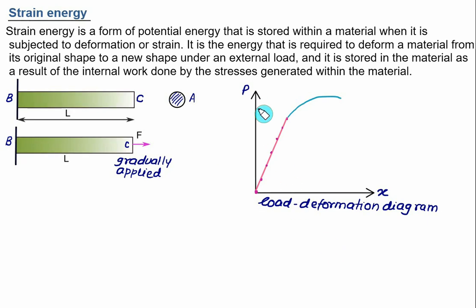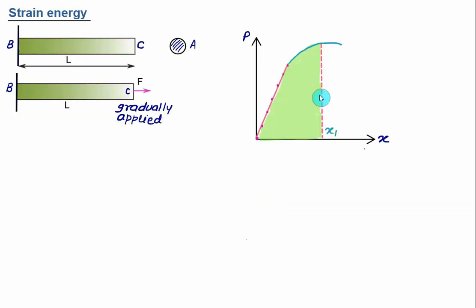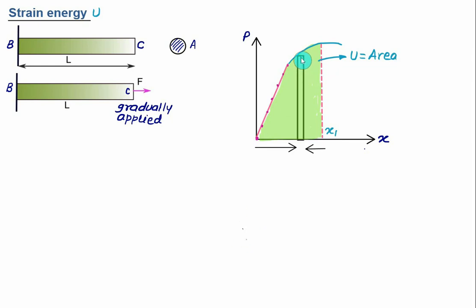The area under the P versus x diagram represents the work done. So if we have a deformation up to x₁, this area represents the work done due to load P, and this area is called the strain energy, represented by the letter U. U is the strain energy — the area under the load versus deformation diagram. The elementary work is represented by a vertical strip for which the load P remains constant.